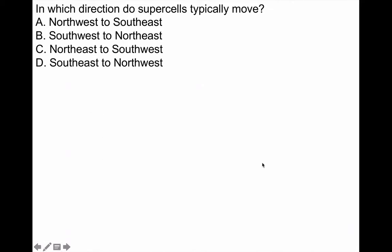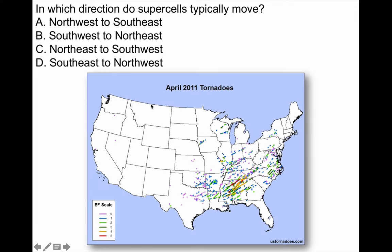Here's another question: in which direction do supercells typically move? Supercells are the primary storm type that make tornadoes. Do they move northwest to southeast, southwest to northeast, northeast to southwest, or southeast to northwest? A map showing all 2011 April tornadoes clearly shows most trajectories go from the southwest to the northeast — because the supercell is the storm that makes big tornadoes, and the tornado follows the direction the supercell goes.